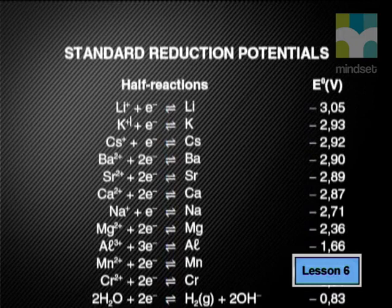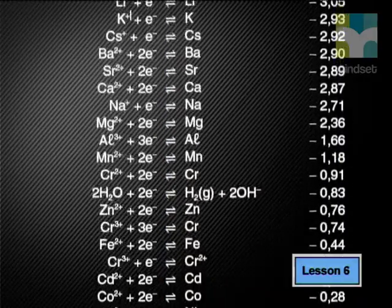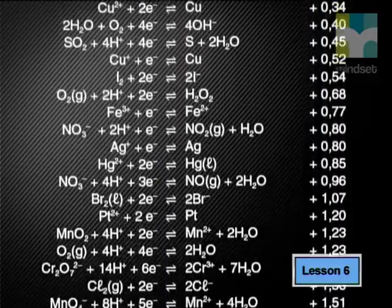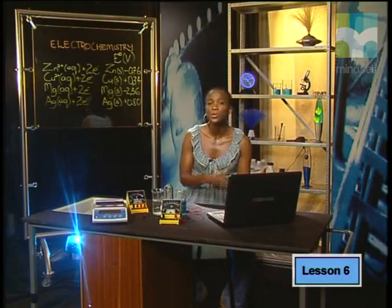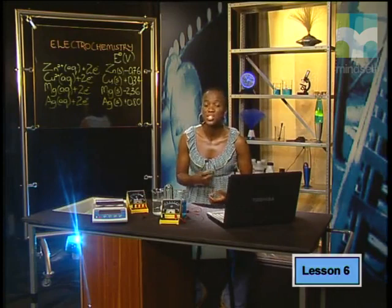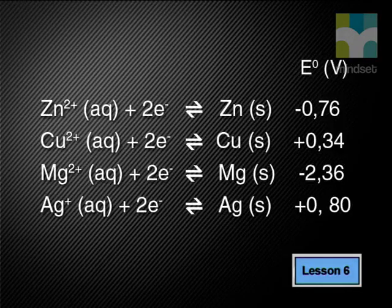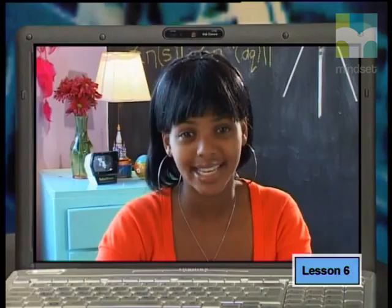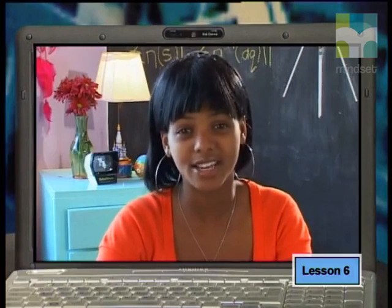Chemists use the standard hydrogen electrode to measure the E° value of many standard half cells. They collate the E° values in a table together with the cell reactions written as a chemical equilibrium. The values are ordered from the most negative to the most positive, or from most positive to most negative. Here we've tabulated the E° values and half cell reactions for zinc, copper, magnesium, and silver standard half cells. Both the zinc and magnesium half cells have negative E° values.